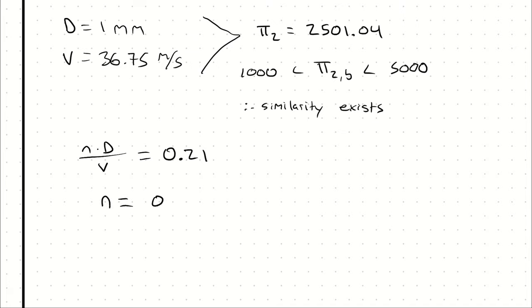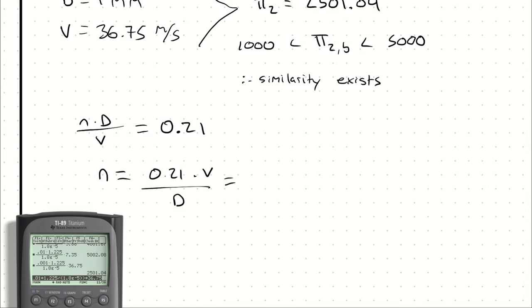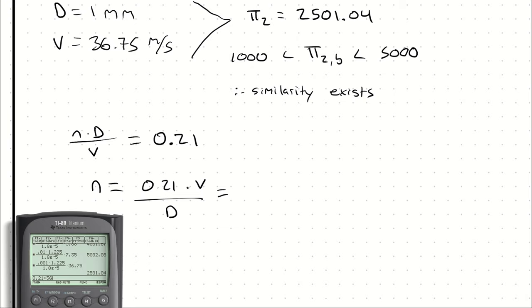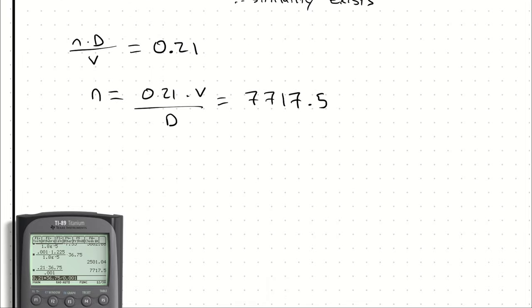So we can say at this data point, n times diameter divided by velocity is probably going to be 0.21. Therefore, n would be 0.21 times velocity divided by diameter. So 0.21 times 36.75 divided by 0.001, the shedding frequency is likely to be about 7717.5. But note that we could only do that because we had similarity.